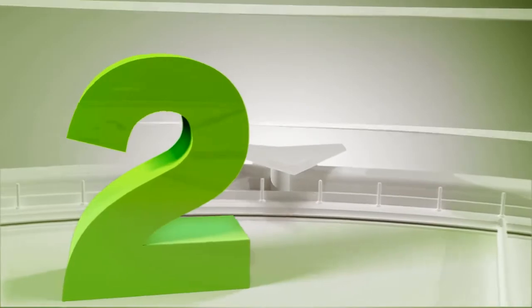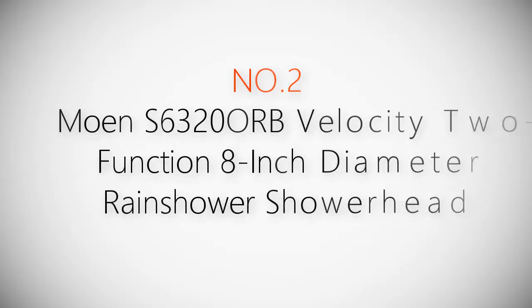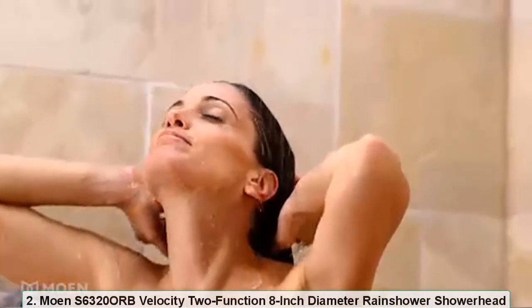Product number two: Moen S6320RB Velocity Two-Function 8-inch Diameter Rain Shower Showerhead.